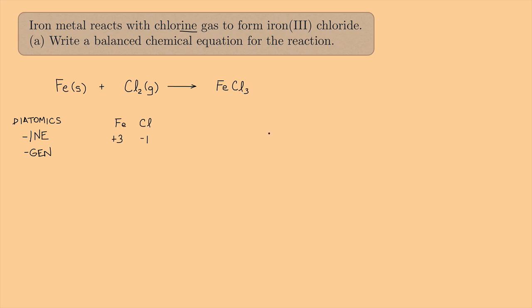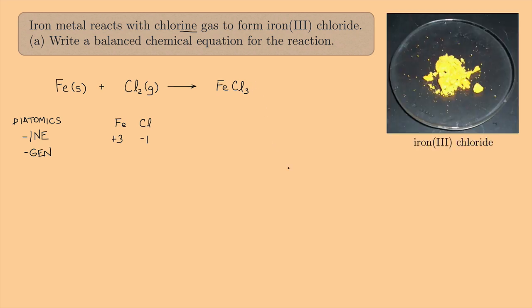So that means we're going to have iron Fe and then chlorine Cl₃. And what is this? A solid, a liquid, a gas? Here's a picture of iron(III) chloride. You can see that this ends up being a solid here. Now you can see the picture, so we know this must be a solid.